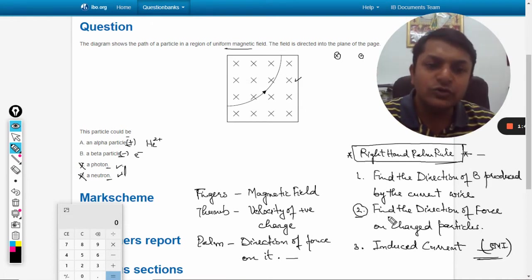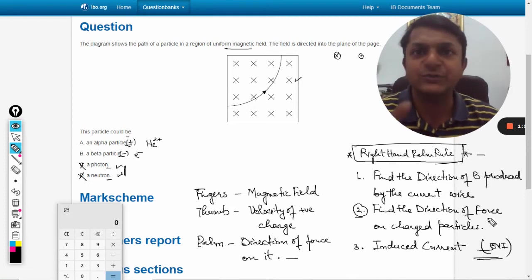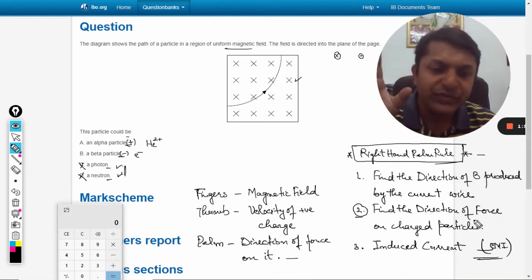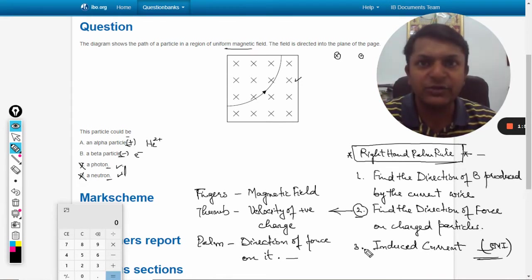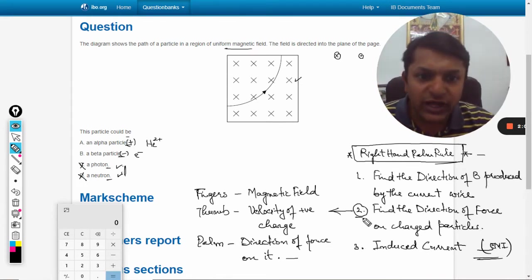Type 2 is used to find the direction of the force on a charged particle in a magnetic field. We will be using Type 2 now, not Type 1 or Type 3.